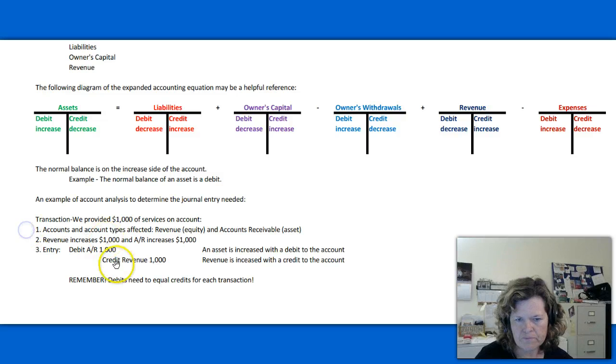So first step, what are the accounts in the account types affected? So we're providing services, so revenue would be affected, and that's an equity account. We remember from our accounting equation. Also, accounts receivable are affected. Accounts receivable are an asset. And remember,